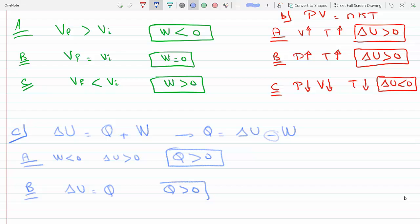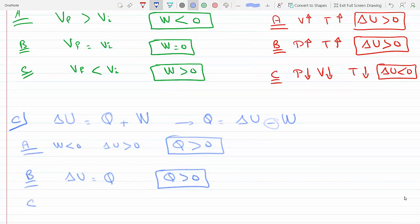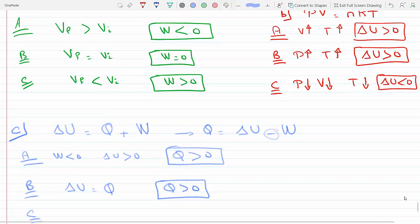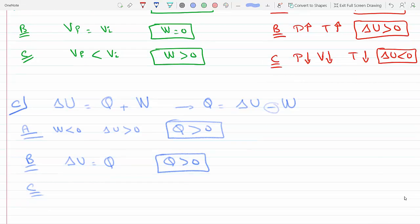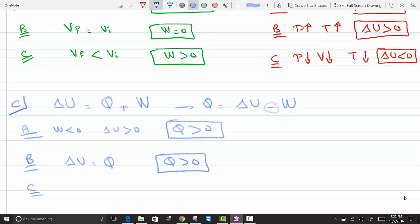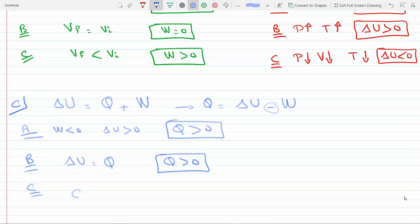And for C we said that the work is greater than zero and Delta U is less than zero so both terms finally will be negative after you plug in the numbers because you have minus here on the work and so Q will be less than zero because you're gonna have a negative number. Delta U is less than zero and here you have the work is greater than zero but there's a minus so you're adding two minuses so you will get a minus answer so that means Q will be less than zero.